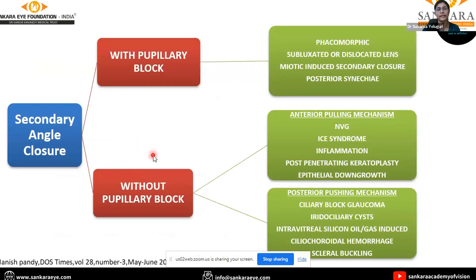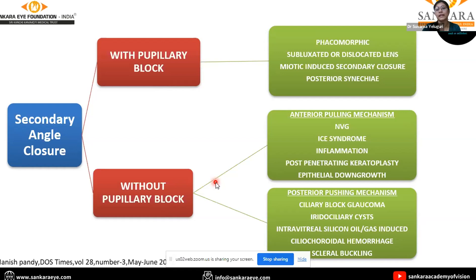A short note on secondary angle closure disease: it is divided into groups with pupillary block or without pupillary block. With pupillary block includes phacomorphic, subluxated or dislocated lens, miotic-induced secondary closure, and posterior synechiae. Without pupillary block is further divided into anterior pulling mechanisms and posterior pushing mechanisms. Anterior pulling mechanisms are due to contraction of membranes such as in neovascular glaucoma, iridocorneal endothelial syndrome, inflammatory conditions, and post-penetrating keratoplasty due to fibrous ingrowth or epithelial downgrowth. Posterior pushing mechanisms include ciliary block glaucoma, iridociliary cyst, intravitreal silicone oil or gas, ciliary choroidal hemorrhage, and scleral buckling.